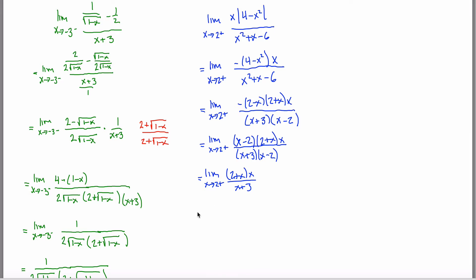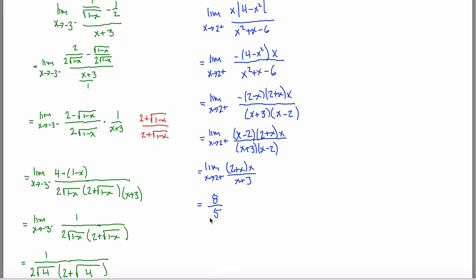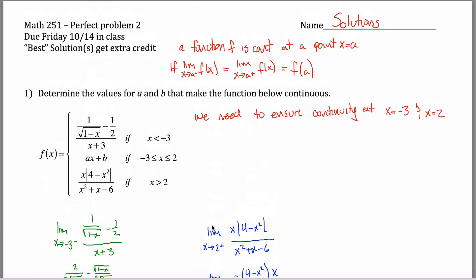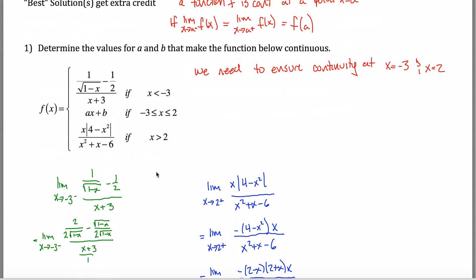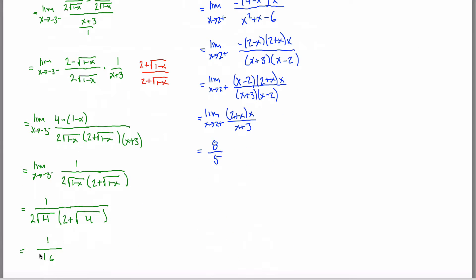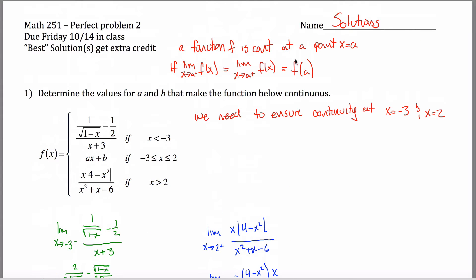Now I can substitute x = 2 directly: (2+2)·2 / (2+3) = 4·2 / 5 = 8/5. So for continuity, I need the limit from the positive side to equal the limit from the negative side to equal the height of the function at x = 2.